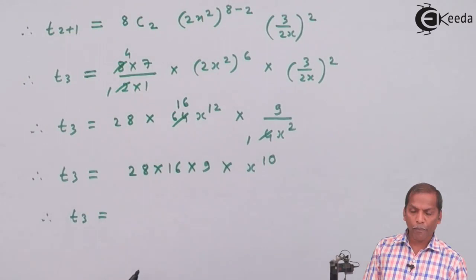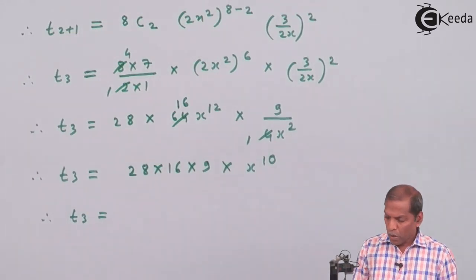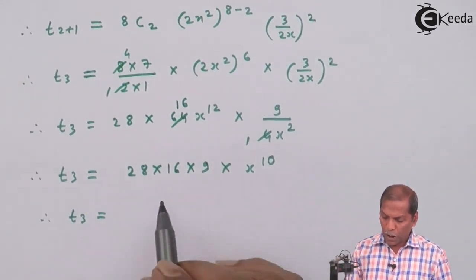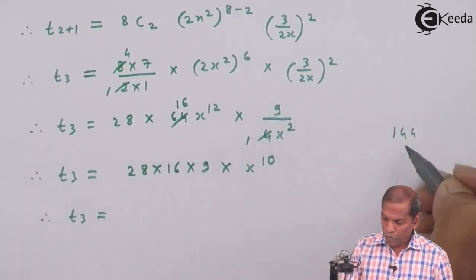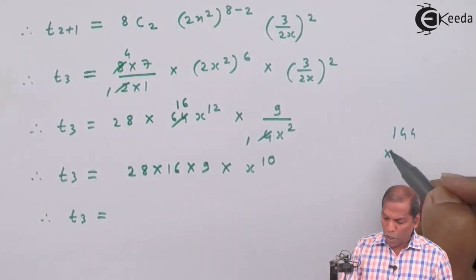Therefore t₃ = we have to multiply these terms. 16×9 gives 144, and that we multiply by 28.